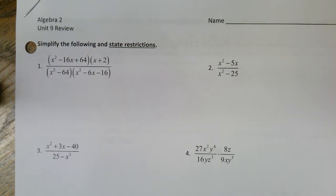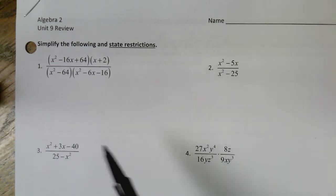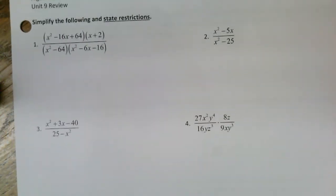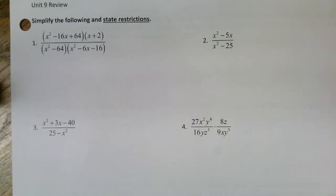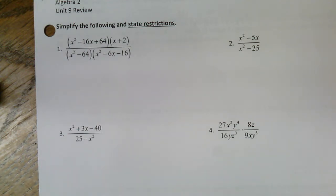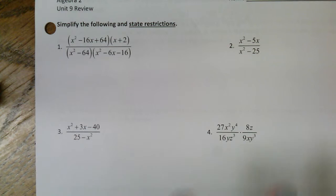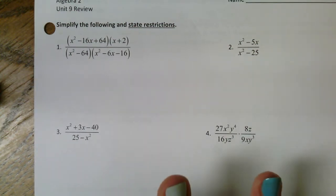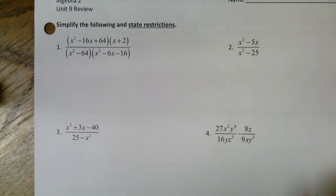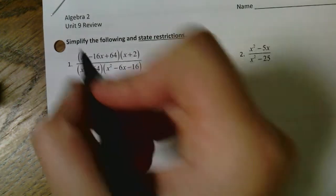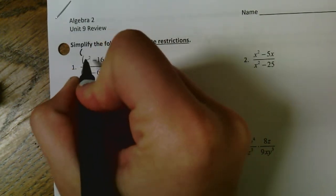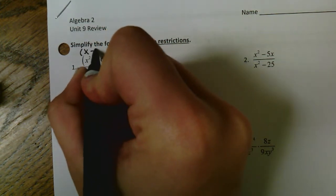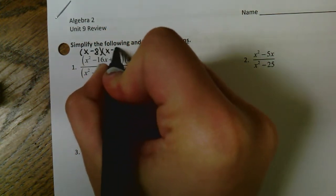Examples one, two, and three are all ones that are straight simplifying — they don't have multiplication or division in between. These ones up here are just straight simplifying. So if we look at the very first example: you always start these problems by factoring. A big portion of the test is going to be these problems, so always factor first — don't try to start eliminating stuff or diving right in.